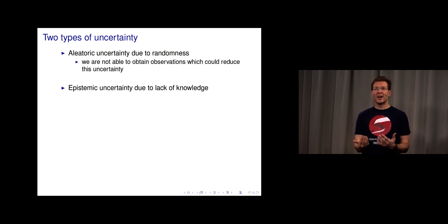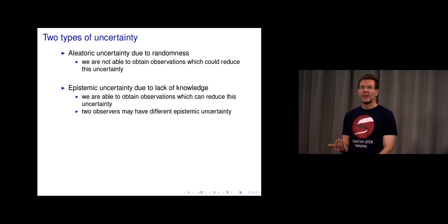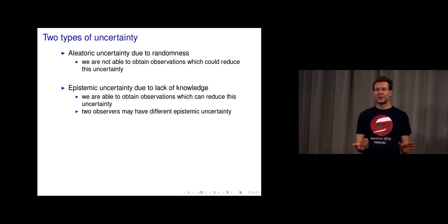It's also possible then that this can change. If I show this coin to someone, their knowledge will change, their epistemic uncertainty will change, and they will know which side is up. So we are able to obtain observations which can reduce this uncertainty. Also, two observers may have different epistemic uncertainty.